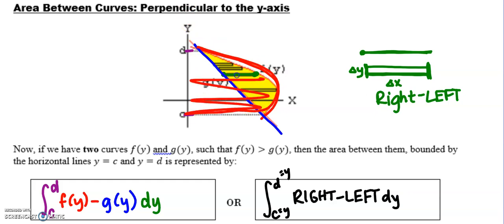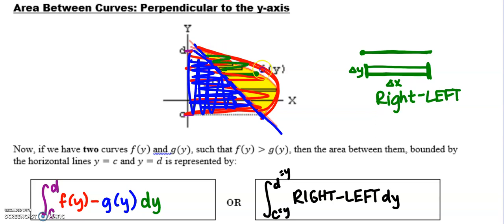If we were to find this whole red area and subtract off this whole blue area, we'd be left with the region in between. We have our greater curve — because on the x-axis greater numbers are to the right — minus our lesser curve, because lesser values are on the left. So we're still doing greater minus lesser, which reads as right minus left.